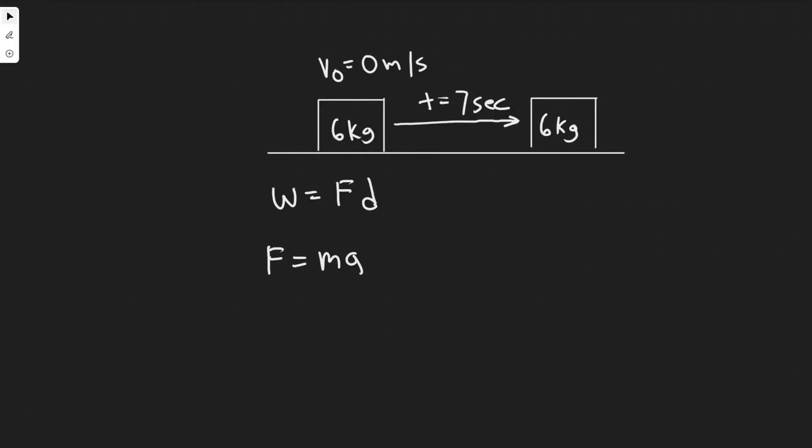In this problem, we're told a box of mass 6 kilograms is accelerated from rest by a force across a floor at a rate of 2 meters per second squared for 7 seconds. Find the net work done on the box.